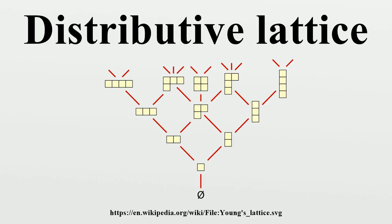Further characterizations derive from the representation theory in the next section. Distributivity entails several other pleasant properties. For example, an element of a distributive lattice is meet-prime if and only if it is meet-irreducible, though the latter is in general a weaker property. By duality, the same is true for join-prime and join-irreducible elements. If a lattice is distributive, its covering relation forms a median graph. Furthermore, every distributive lattice is also modular.